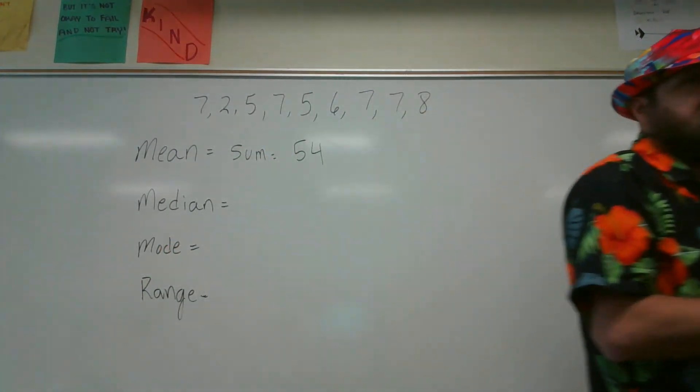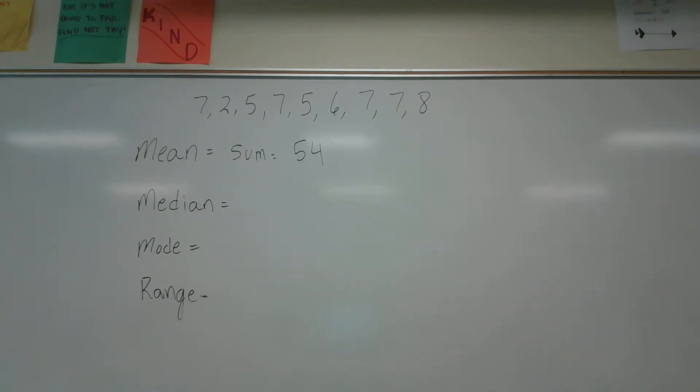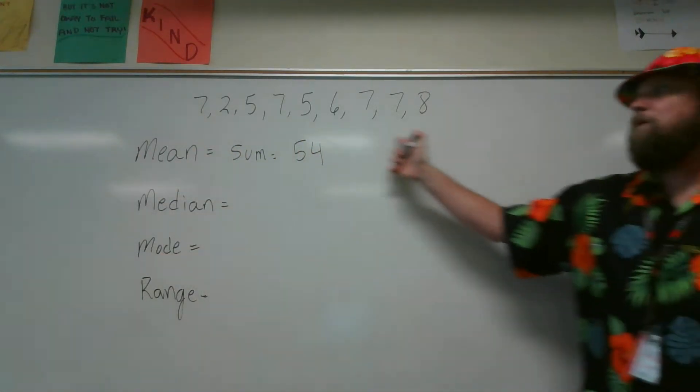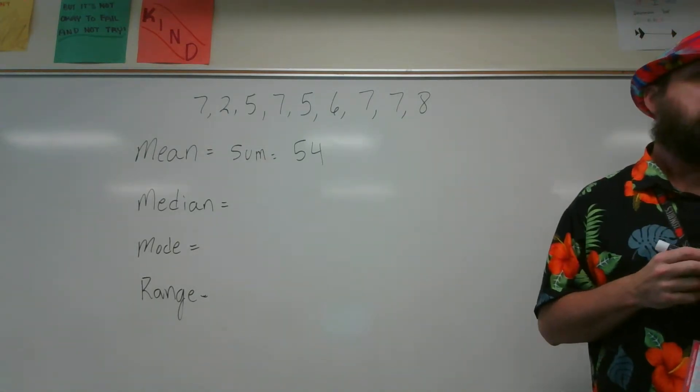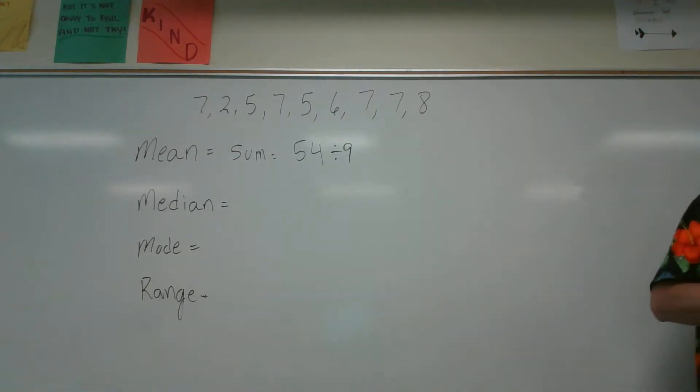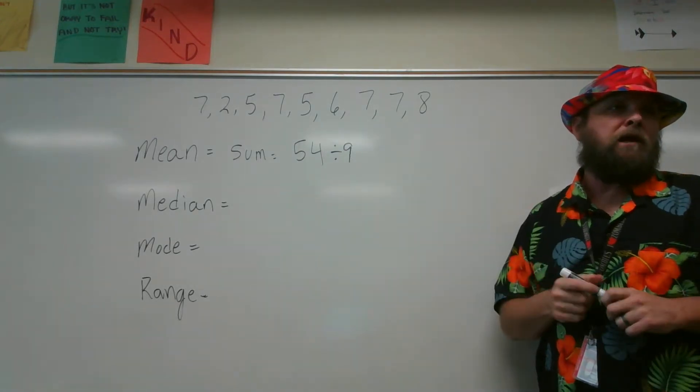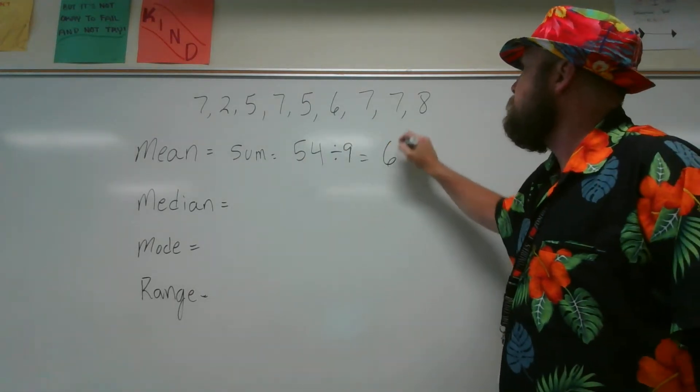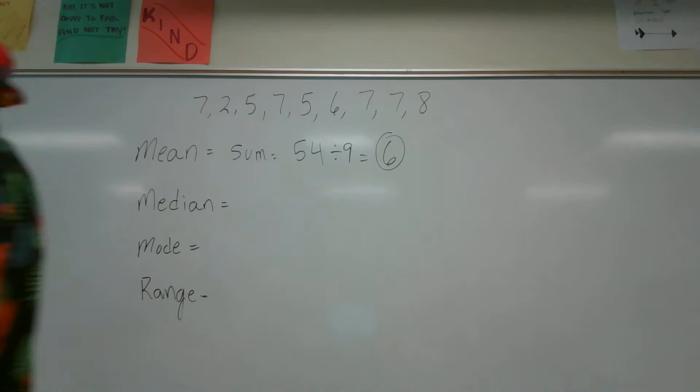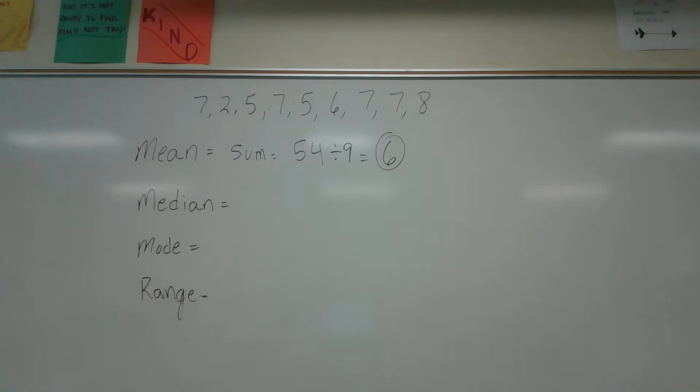Cadence, what is our next step in finding the mean of a set of data? Divide. Divide by what? You think about the number of pieces of data there are. Cadence, how many pieces of data are there? Nine. So I find the sum, I divide by the number of pieces of data. So, Cadence, what's fifty-four divided by nine? Six. The mean is found by finding the sum of the data divided by the number of pieces of data there are. The mean in this case is six.